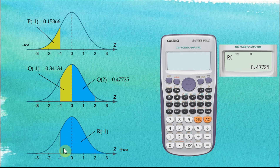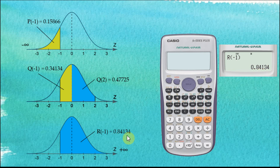We would like to find from positive infinity to negative 1. In the calculator, we key in negative 1, close bracket, equal. The area from positive infinity to negative 1 is equal to 0.84134. That's how we find the area under the graph for certain sections using the normal distribution functions in the Casio FX570ES Plus or FX991ES Plus calculator.